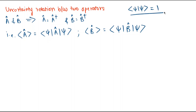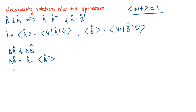Now let's introduce two new operators delta-A-cap and delta-B-cap, given by: delta-A-cap equals A-cap minus expectation value of A-cap, and delta-B-cap equals B-cap minus expectation value of B-cap. These operators represent the small uncertainties of our operators A-cap and B-cap.